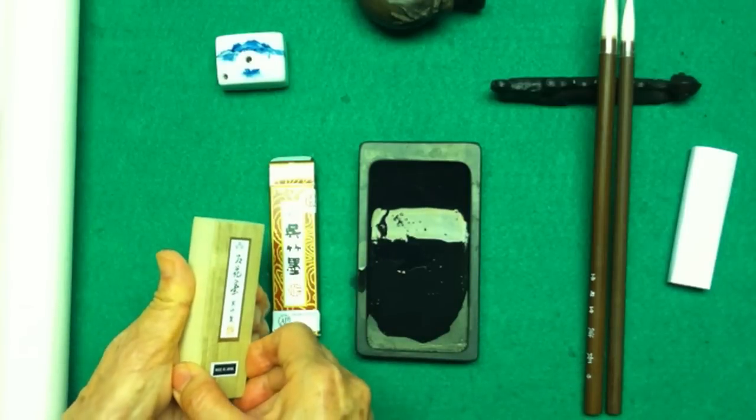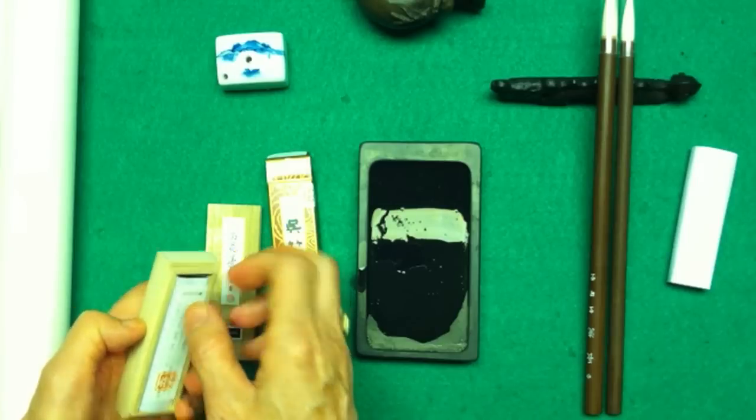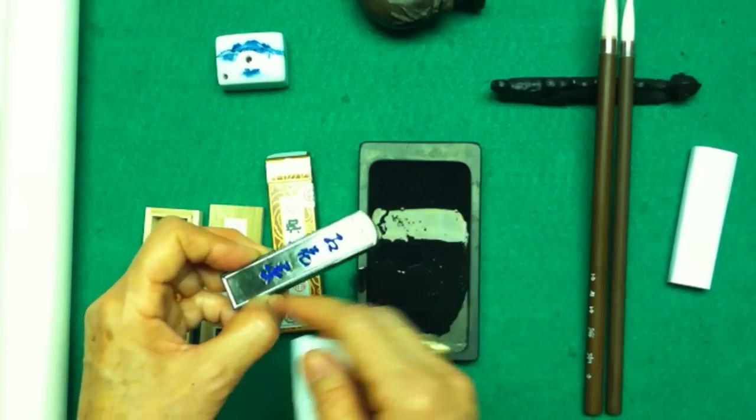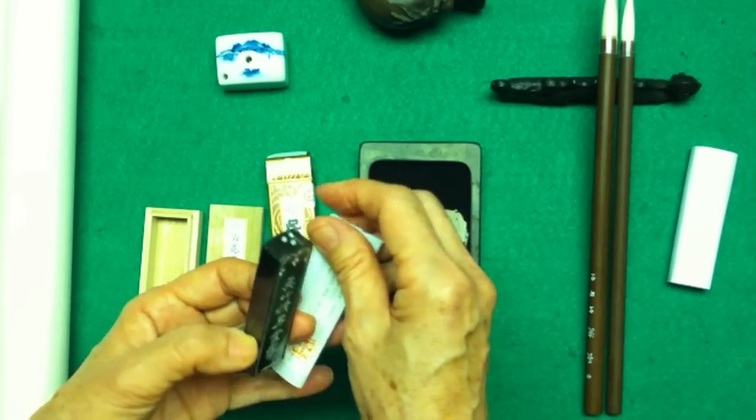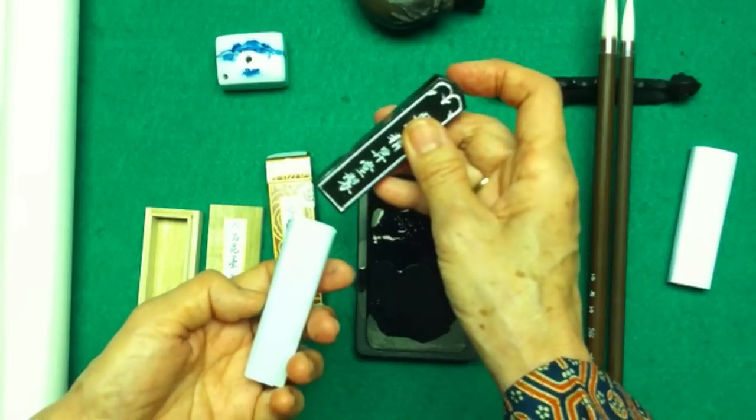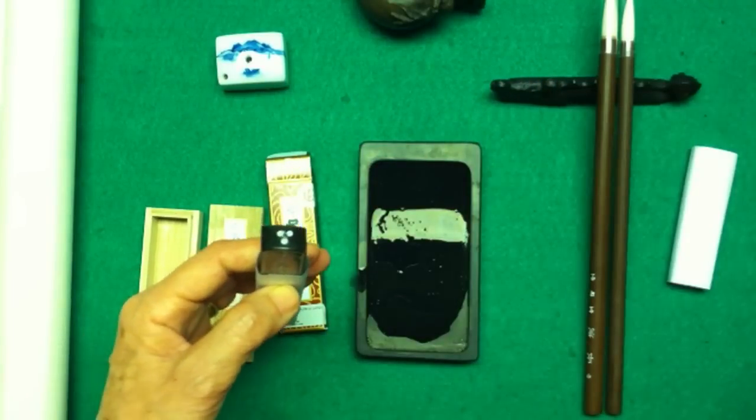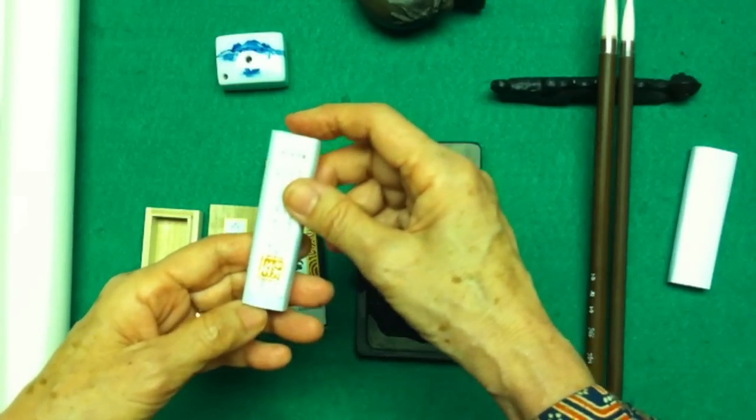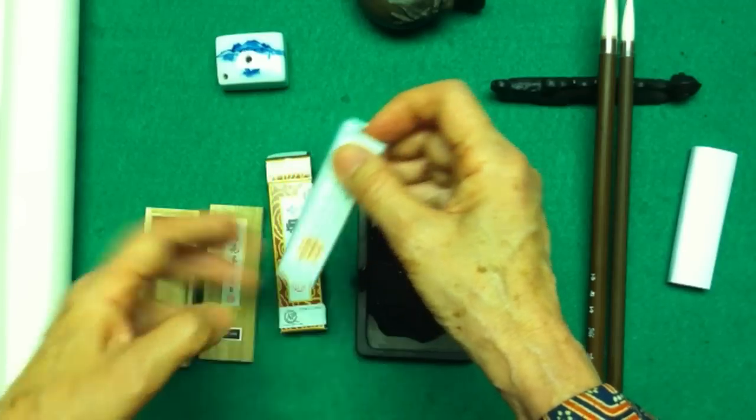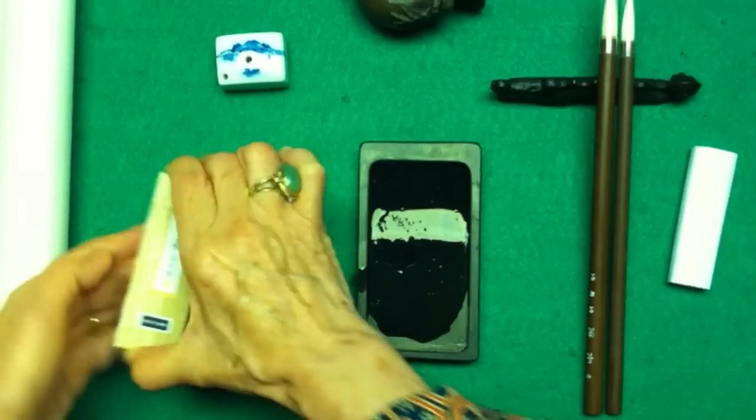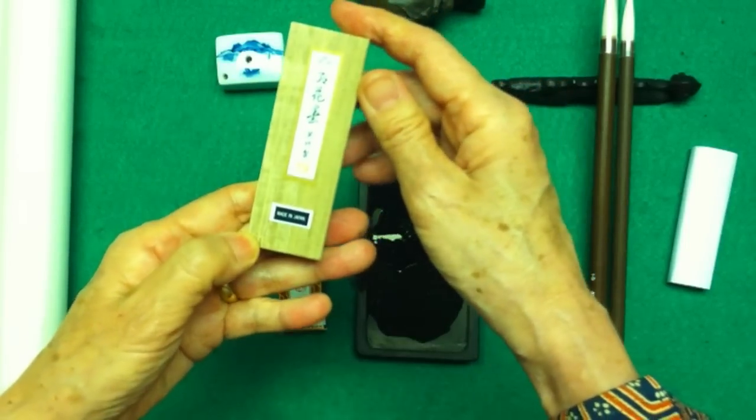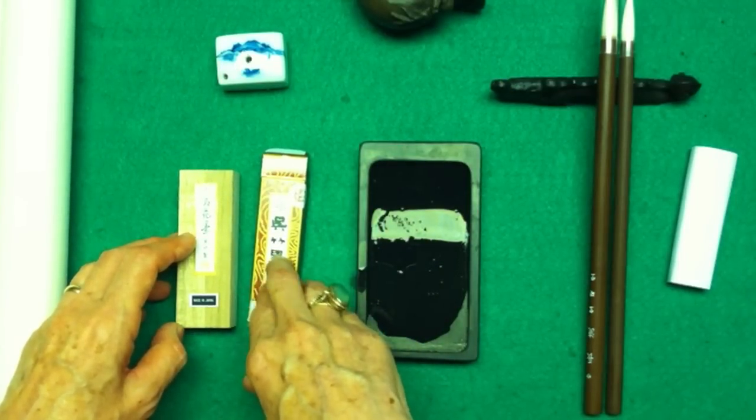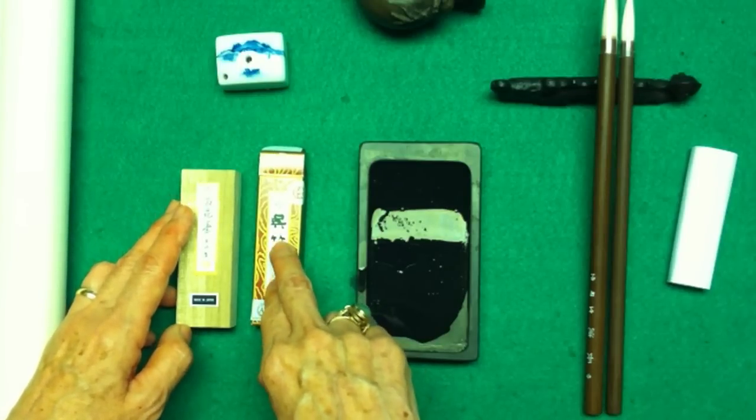The other sumi stick comes in a fancy wooden box and is a little bit bigger. This is Ohana sumi ink, same company, but a little more darker than the one we just ground, made pretty much for calligraphy. Both are good for calligraphy and paintings, but this one I would call professional quality and this one is student quality. I use both, but for most of my students I recommend the student quality.